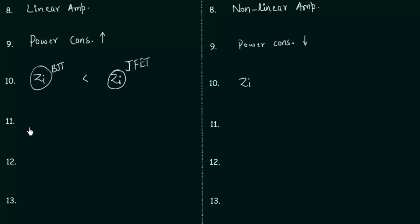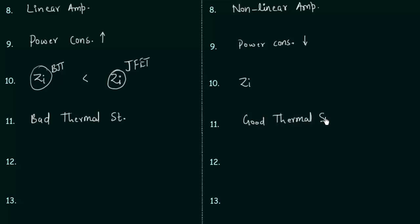The next point is thermal stability. BJT has bad thermal stability, while JFET has good thermal stability compared to BJT. If we talk about gain, the gain of the bipolar junction transistor is high and the gain of JFET is low.